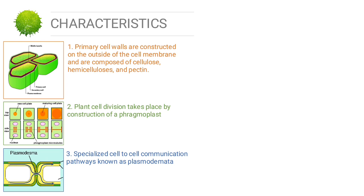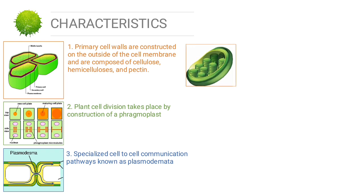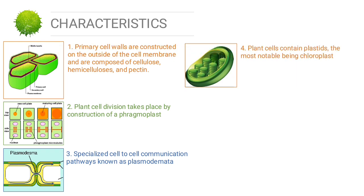Specialized cell-to-cell communication pathways known as plasmodesmata occur in the form of pores in the primary cell wall, through which the plasmalemma and endoplasmic reticulum of adjacent cells are continuous.